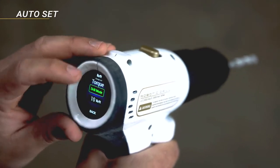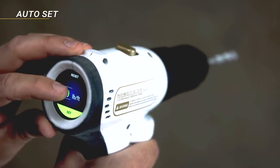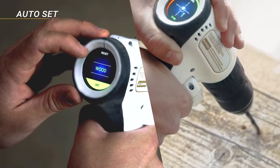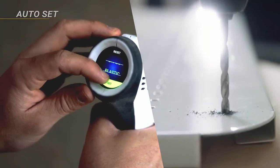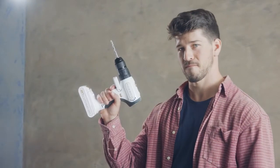And finally, auto set allows you to automatically set torque speed according to the material you're working with and the size of the drill bit. Of course, you can still adjust torque manually. We're here to improve, not extract.